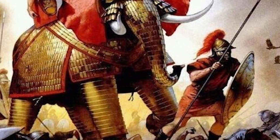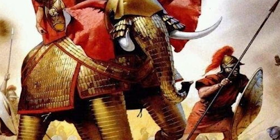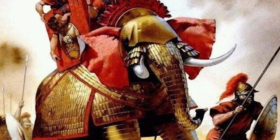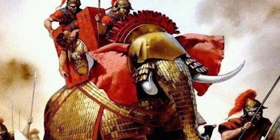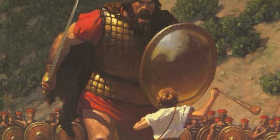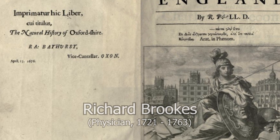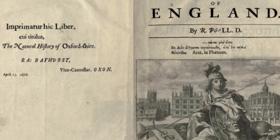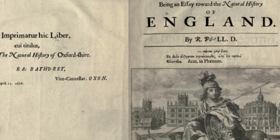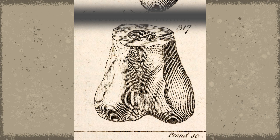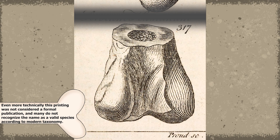Without knowledge of the dinosaur grouping, Plott would theorize these remains belonged to a Roman war elephant, which was reasonable, as the Romans had controlled much of southern England from 43 to 410 AD, or possibly a giant human, citing examples from the Bible like Goliath. Regardless, this illustration and description would later be published in a book by Richard Brooks nearly 100 years later in 1763, where someone — possibly Brooks or another illustrator — would caption the specimen with a genus and species name, technically making this the first genus and species name ever assigned to dinosaur remains.